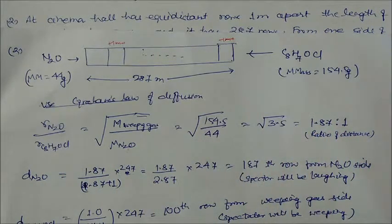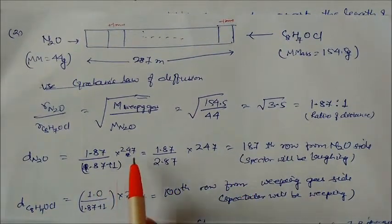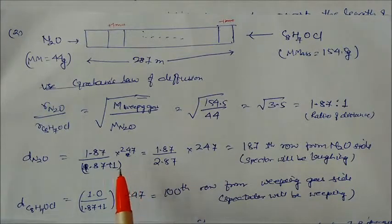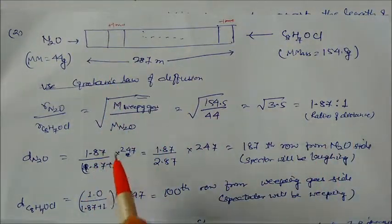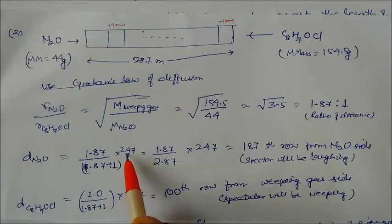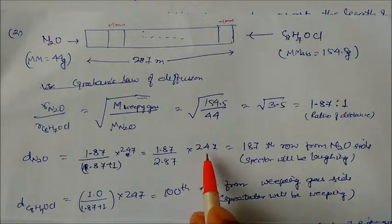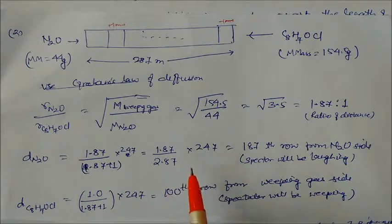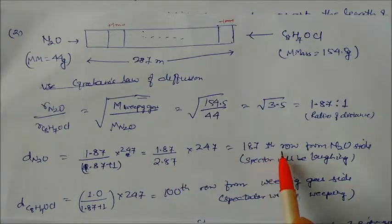The distance traveled by nitrous oxide is calculated as: (1.87 / (1.87 + 1)) multiplied by the total distance of 287 meters. So, 1.87 divided by 2.87, multiplied by 287, gives approximately 187. The nearest row value is the 187th row.